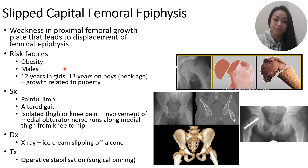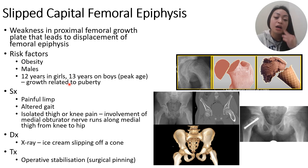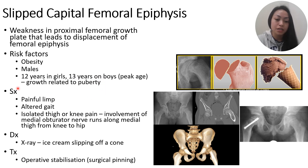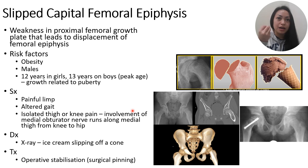Risk factors include obesity, and it's more common in males than females. The peak age of presentation is around 12 years in girls and 13 to 14 years in boys, as it's related to bone growth during puberty. Symptoms include a painful limp and altered gait. They can also present with isolated thigh or knee pain due to involvement of the medial obturator nerve. The most important symptom is the painful limp.